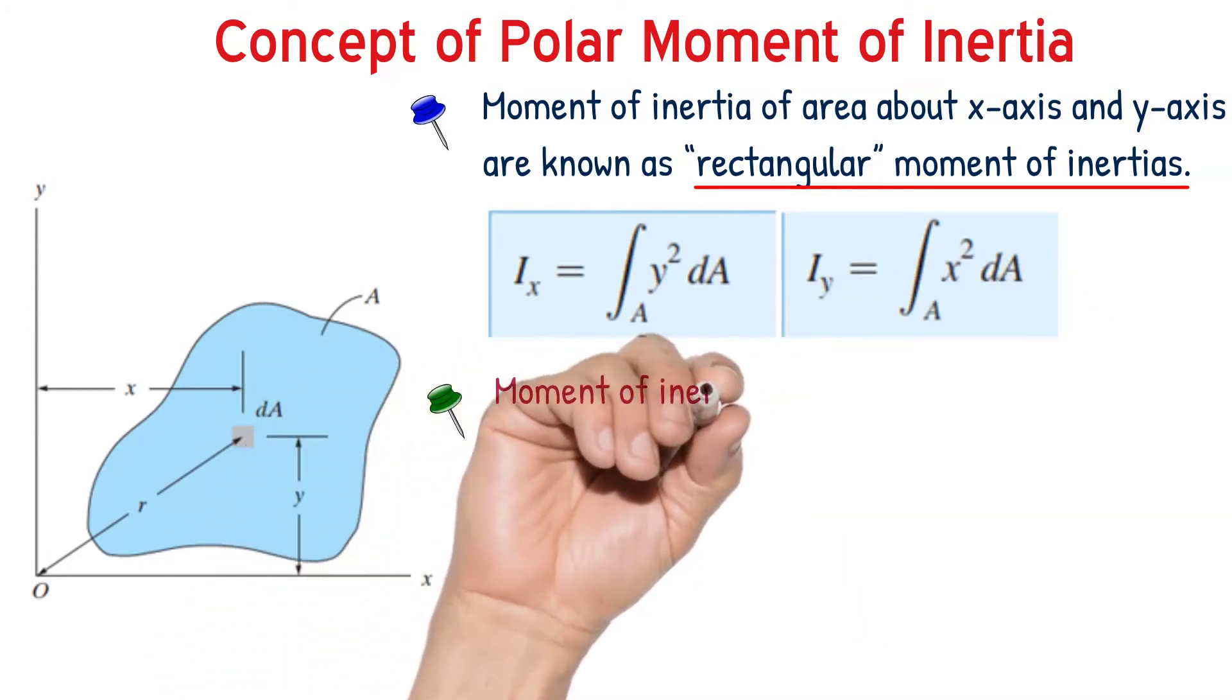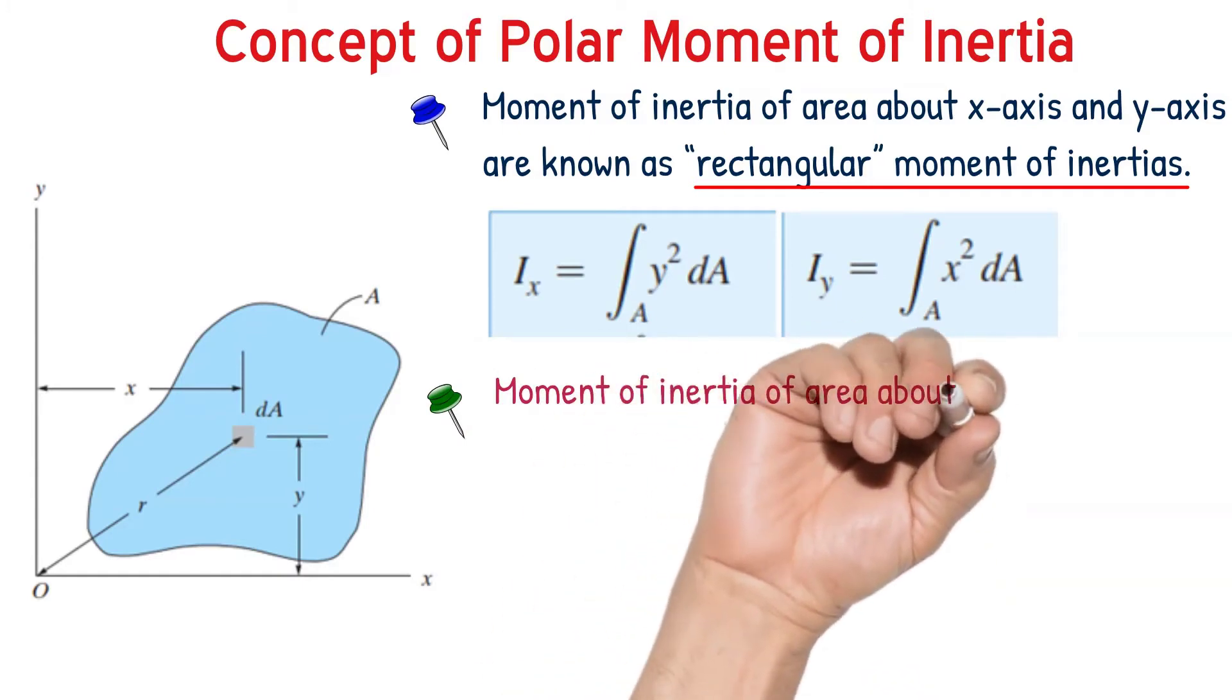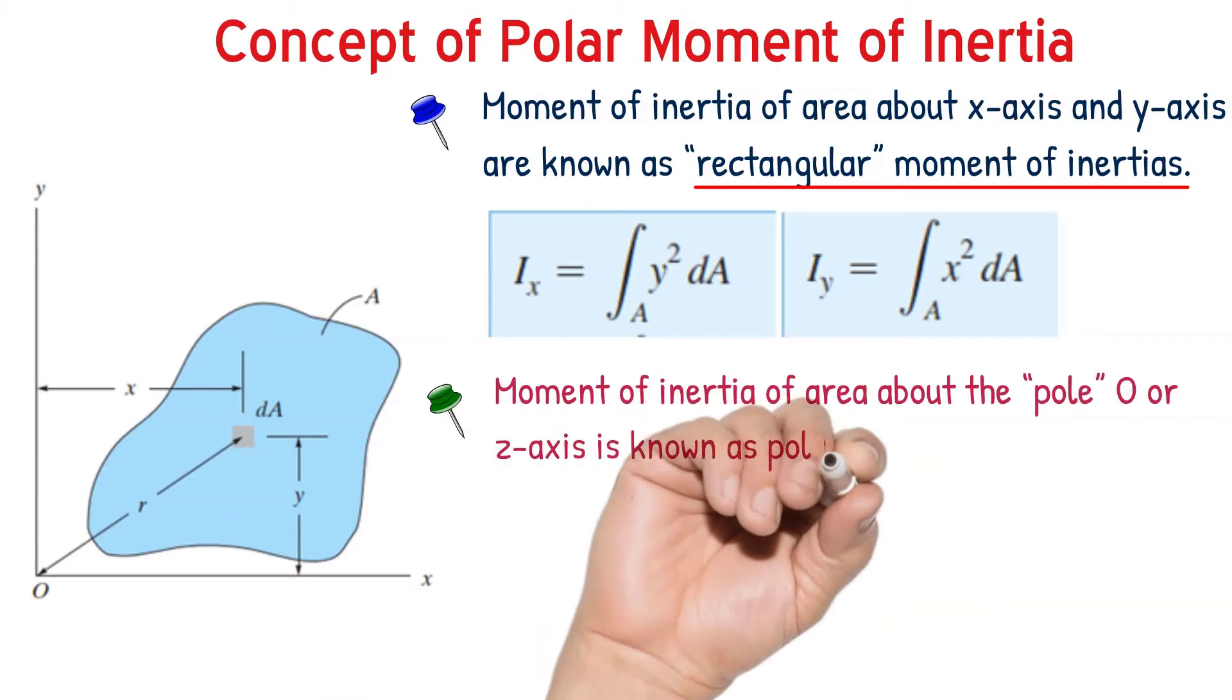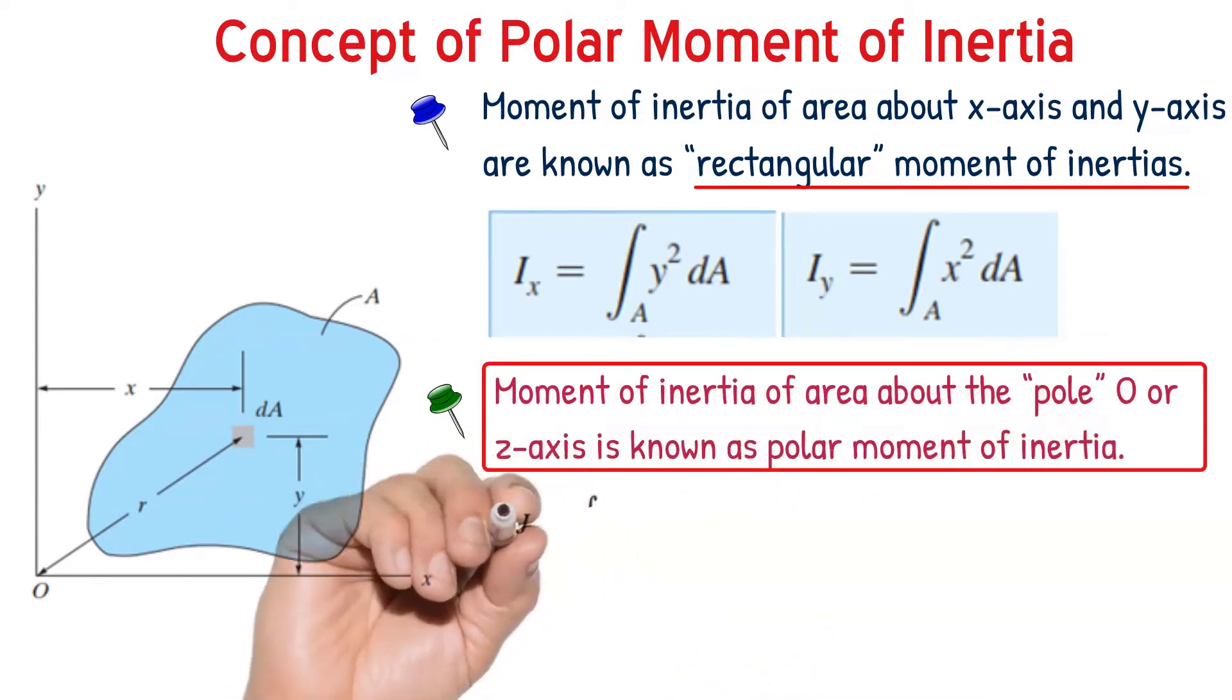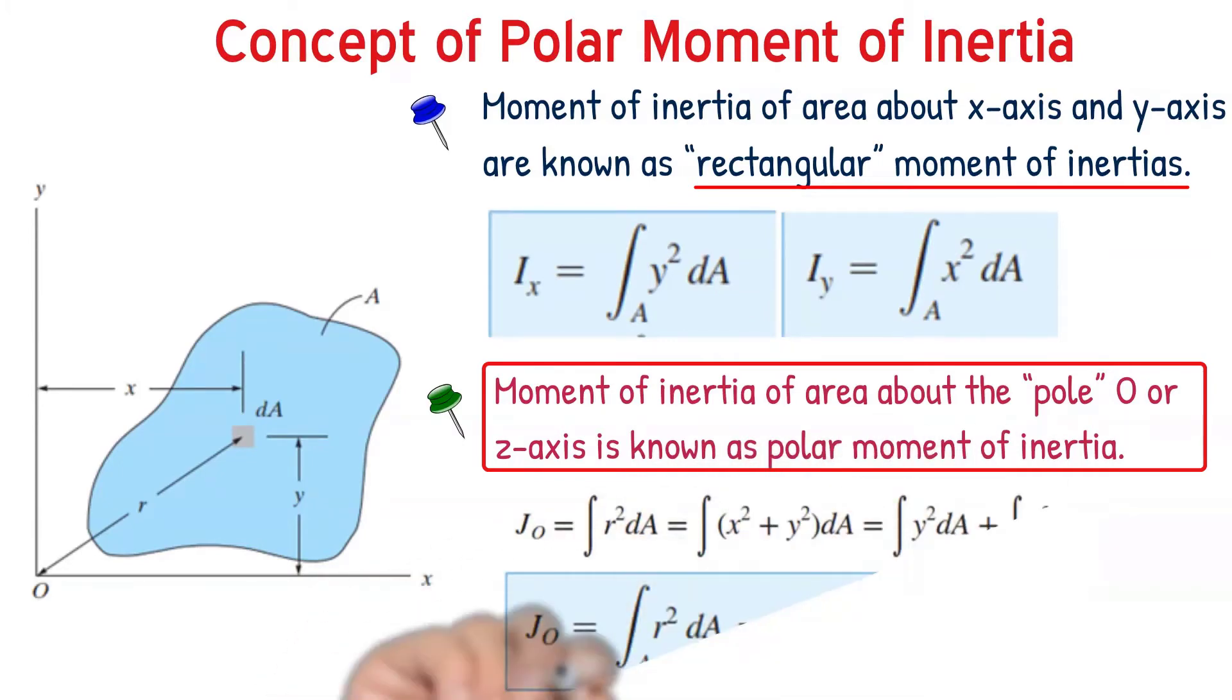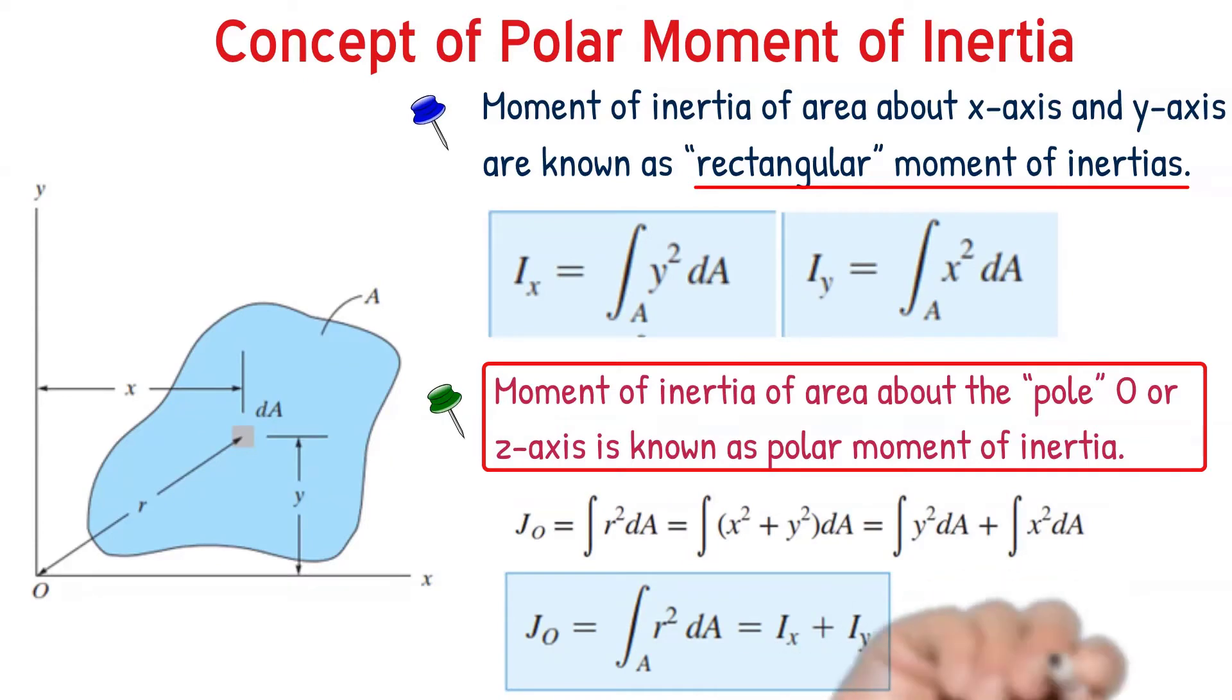If we need to determine moment of inertia of the same area about the pole, about O, which is the Z axis, we call that answer polar moment of inertia. Moment of inertia about a perpendicular axis, perpendicular to the area of cross section is known as polar moment of inertia.